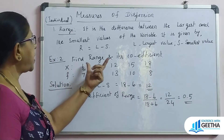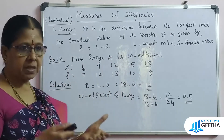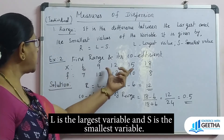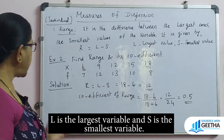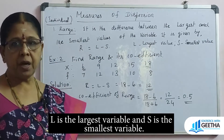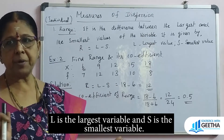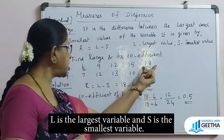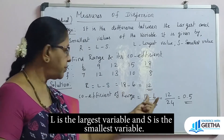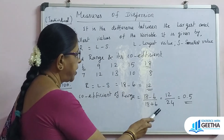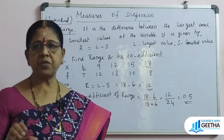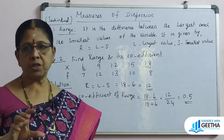For a discrete series problem: find range and its coefficient. We have the variable value X and the corresponding frequency F. By definition, range is the difference between the largest and smallest values of the variable — we look at the variable values only, not the frequency. The largest value L is 18 and the smallest value S is 6. So R = 18 minus 6 = 12. Coefficient of range = (18 minus 6) divided by (18 plus 6) = 12 divided by 24 = 0.5.